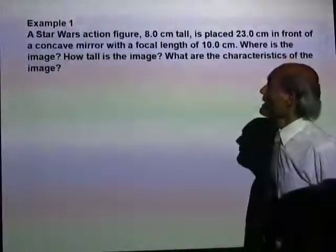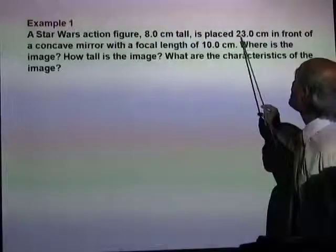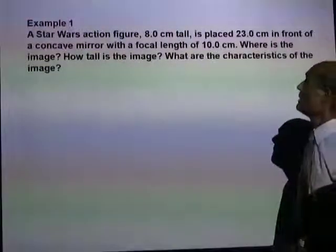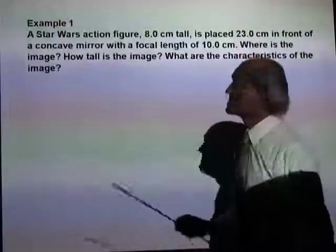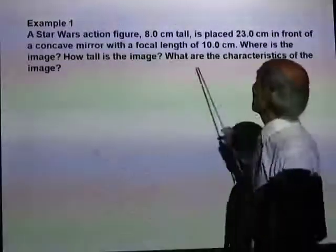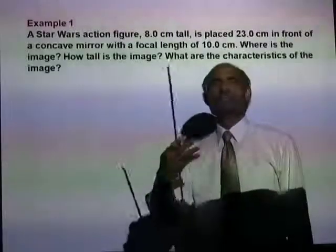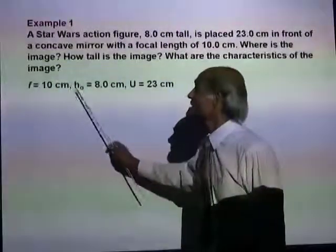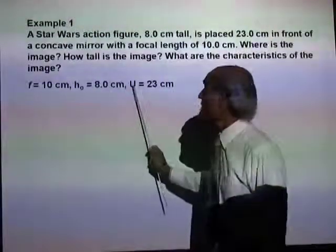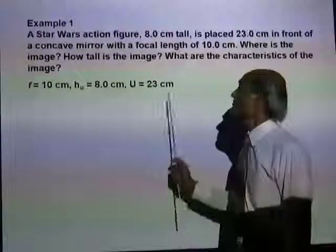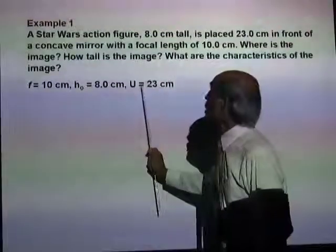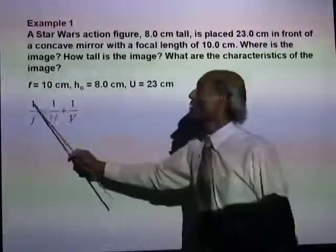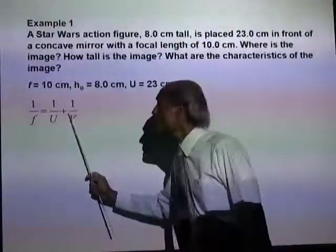Let's do a small problem. A Star Wars action figure 8 cm tall is placed 23 cm in front of a concave mirror with a focal length of 10 cm. Where is the image — that means what is the image distance? How tall is the image? What are the characteristics of the image? The focal length of the mirror is 10 cm, the height of the object is 8 cm, and the object is placed 23 cm from the mirror. We can use the mirror formula to calculate the image distance: 1 over F equals 1 over U plus 1 over V.